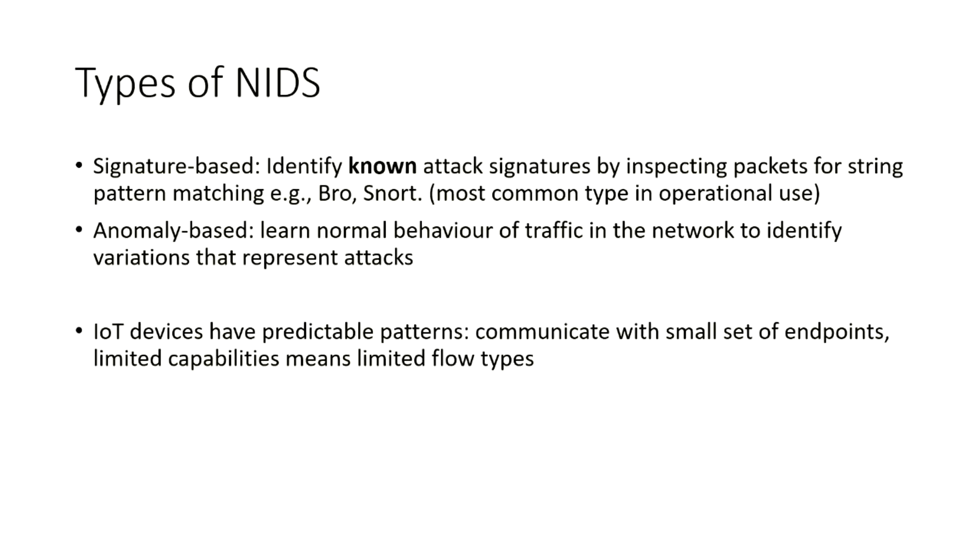There are different types of network intrusion detection systems: signature-based and anomaly-based. Signature-based systems rely on a database of known attack signatures and inspect packets to find those signatures through string-pattern matching. Anomaly-based systems learn the normal behavior of traffic in the network to identify variations that represent attacks. Because of high variability, attacks can be concealed within what is considered normal behavior, so these systems often have high false positive rates in operational use. Anomaly-based systems have enjoyed success in academia, but that hasn't translated into the real world. However, IoT devices have really predictable network traffic patterns — they communicate with a small set of endpoints and have limited flow types — making this a promising area for anomaly-based techniques with machine learning.